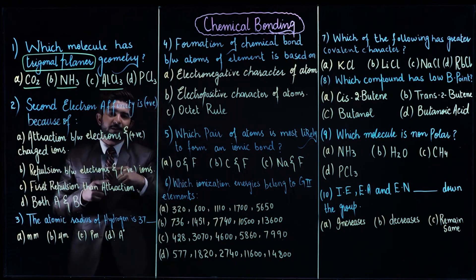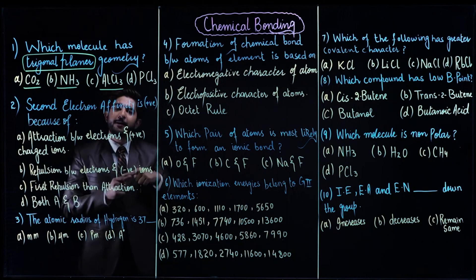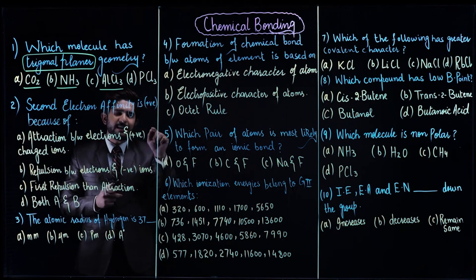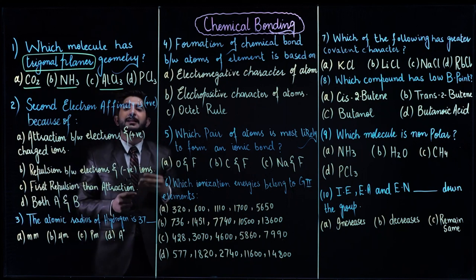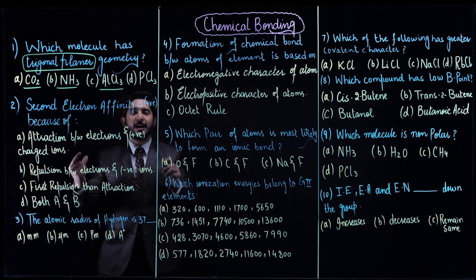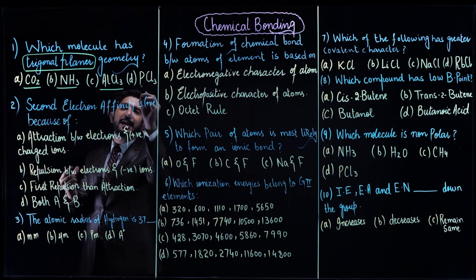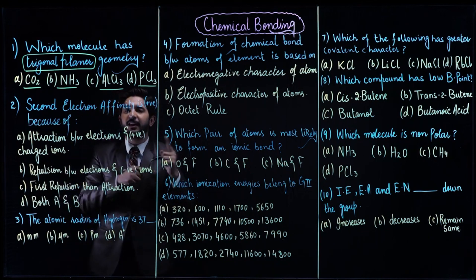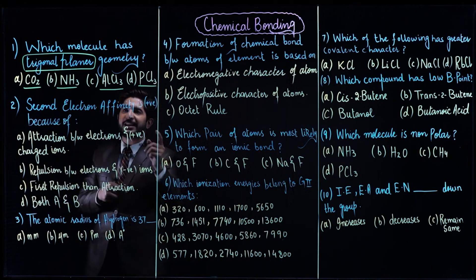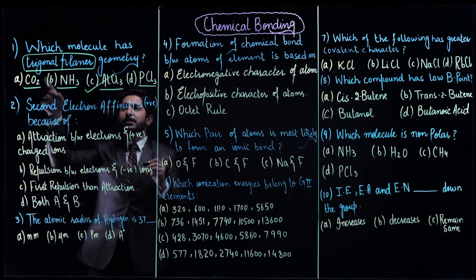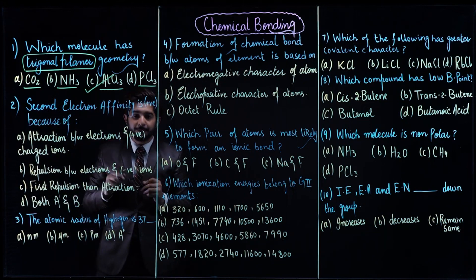PCl3: phosphorus belongs from group number 5, it has five electrons, it is making three bonds and there is one lone pair — again an AB4 type molecule. So what is the AB3 type molecule? AlCl3 — it has trigonal planar geometry.